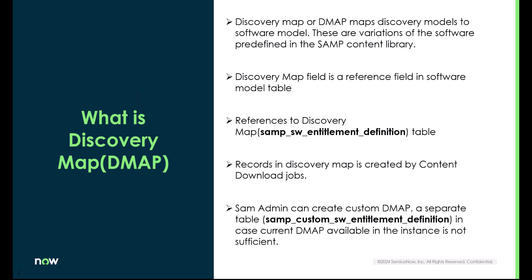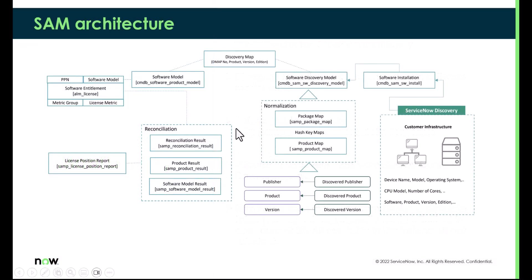The software model table is where authorized or approved software gets loaded and monitored by the SAM admin or SAM team. Discovery models are those which get auto-created based on the software covered in the installations. Common software found for a group of CIs will be clubbed under a discovery model. The discovery engine discovers software from CIs and loads it in the software installation table, which then gets grouped under the discovery model.